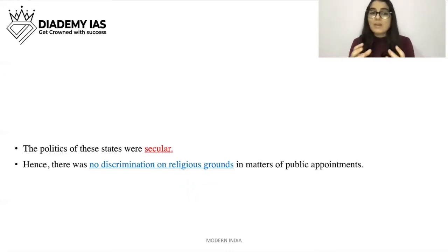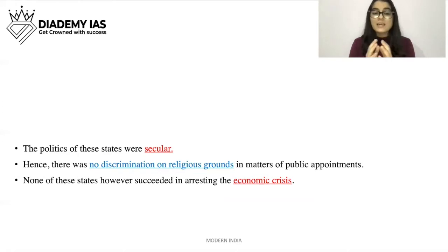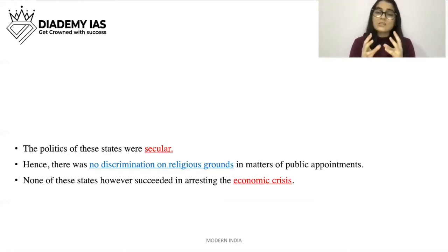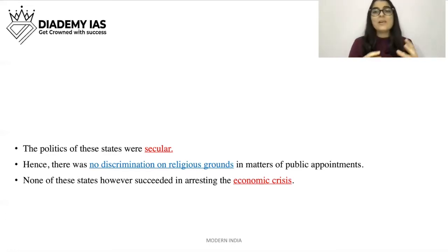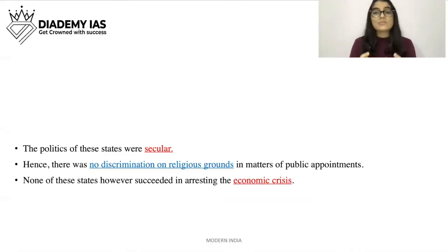The politics of these states were secular — there was no discrimination on religious grounds. None of these states, however, succeeded in arresting the economic crisis. The economic crisis that we read about in Chapter 1 actually increased, because the emperors were more involved with their own luxuries and were not worried about the states' finances.